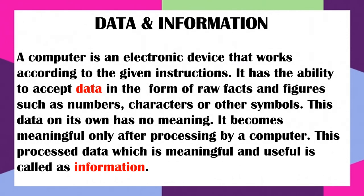Data and information. A computer is an electronic device that works according to the given instructions. It has the ability to accept data in the form of raw facts and figures such as numbers, characters or other symbols. This data on its own has no meaning. It becomes meaningful only after processing by a computer. A computer is an electronic device because it works with electricity and it also needs your instructions to work. When you don't give any commands to the computer, your computer will not work at all, because it does not have a mind of its own.